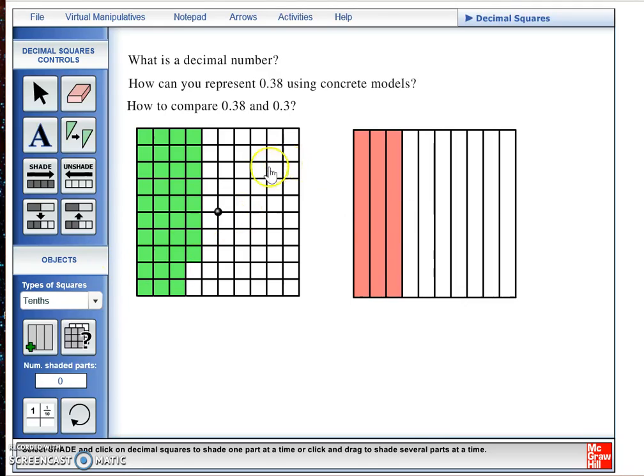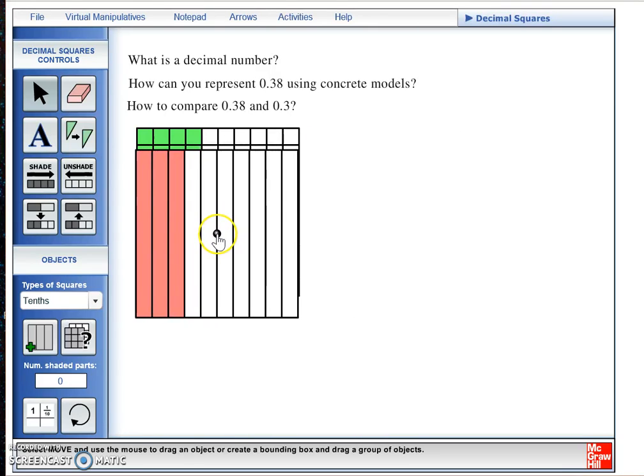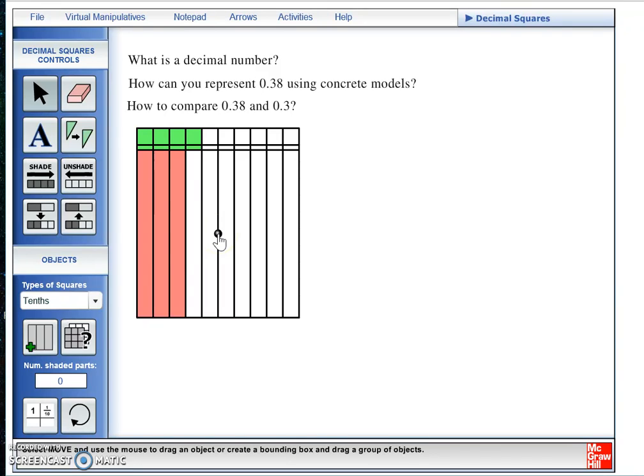Now that we have represented both 38 hundredths and 3 tenths, we can now start comparing both of the decimal squares. If you take the 3 tenths square and hold it over the 38 hundredths square, you will notice that the 38 hundredths seems to show one more bar completely shaded in.